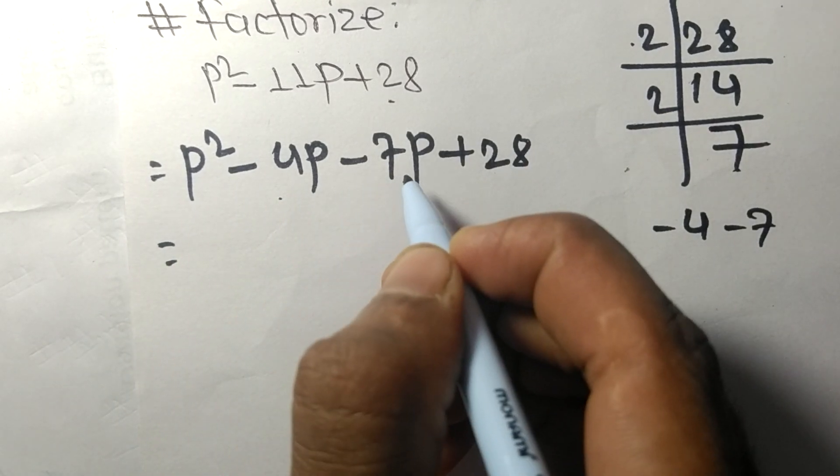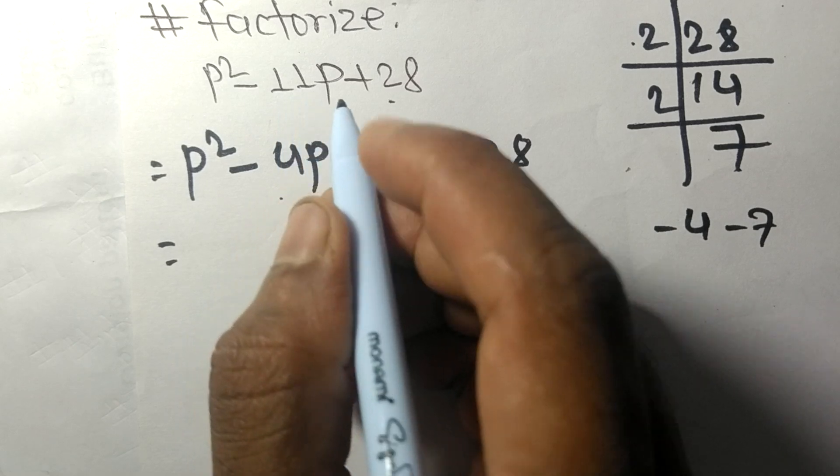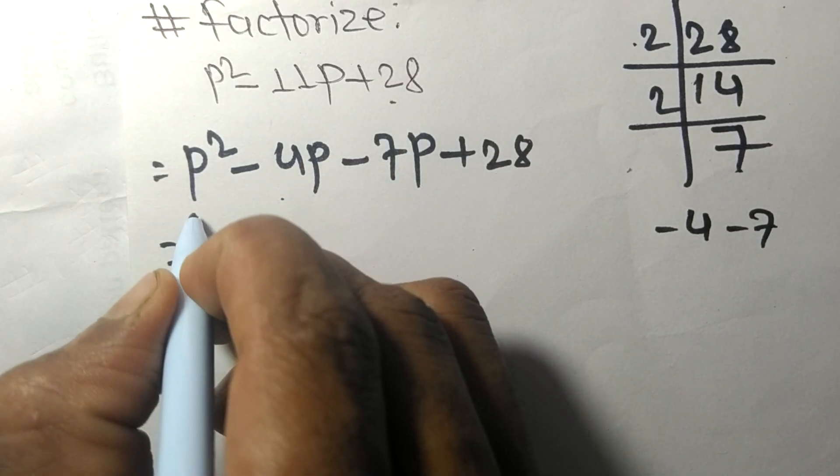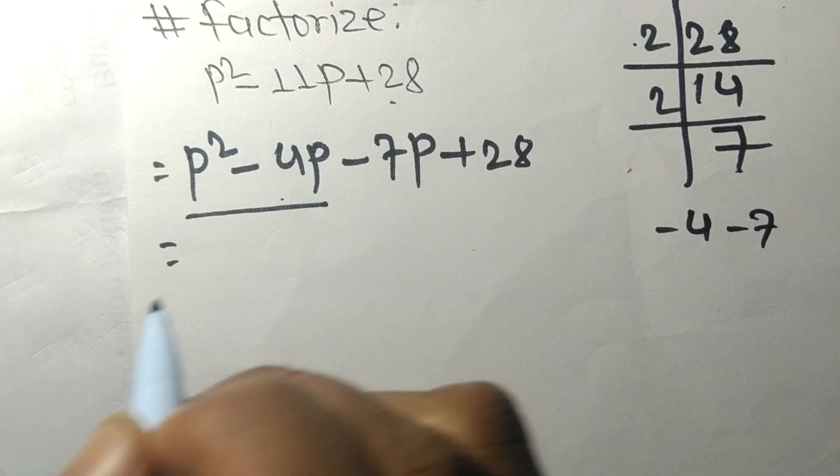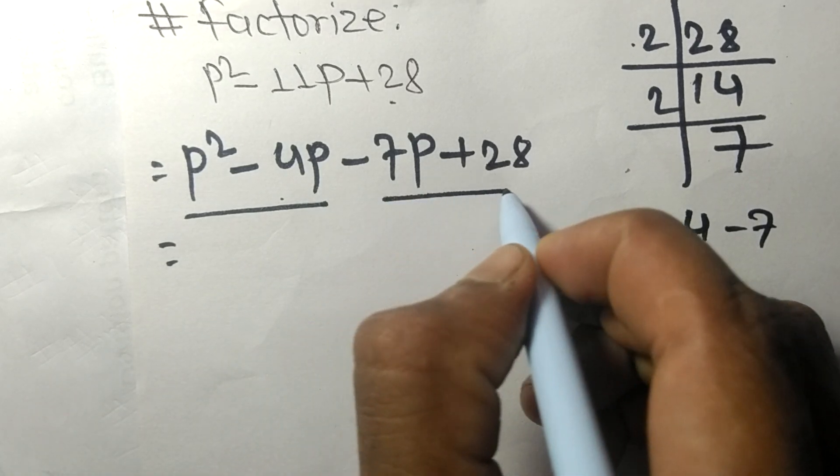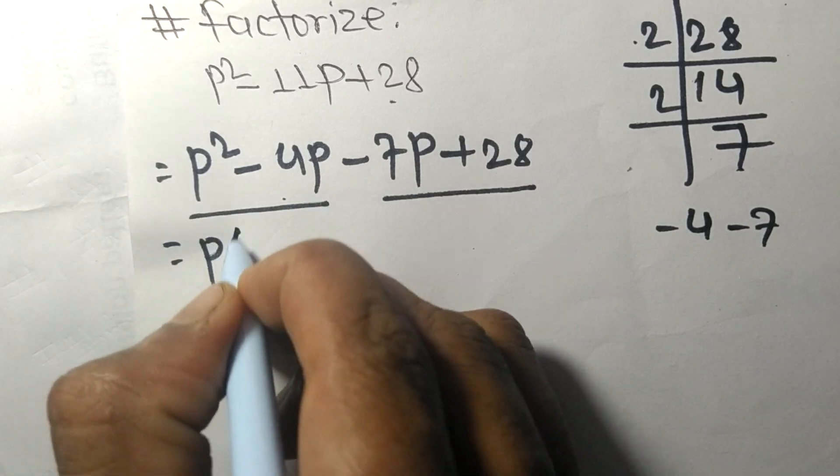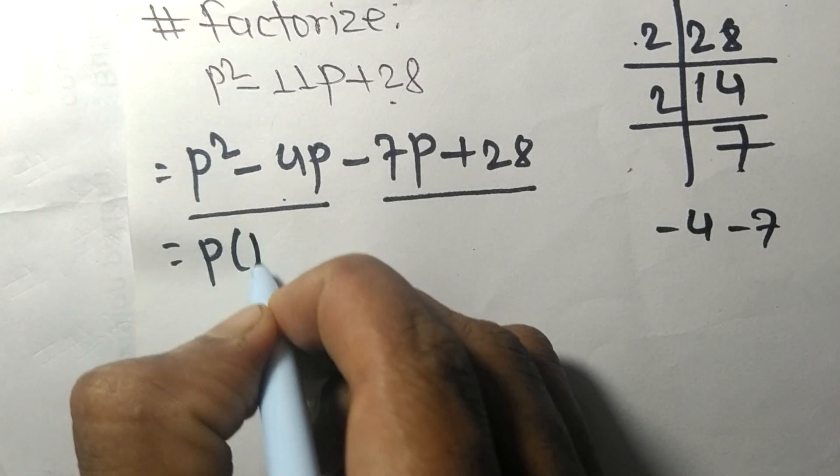Now we find out the common factors in both the first expression and both the last expression. In the first two terms, the common factor is P, so the remainder is P minus 4.